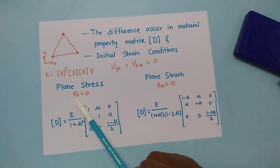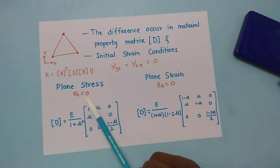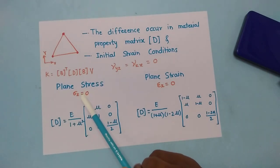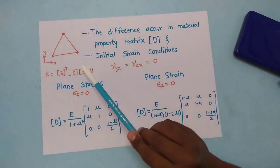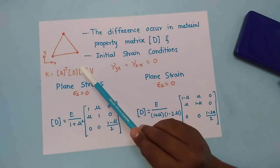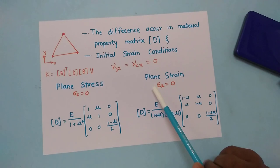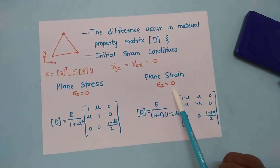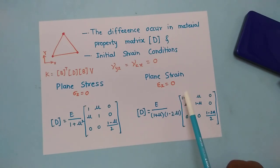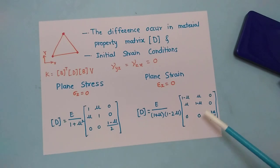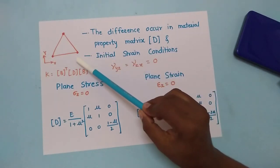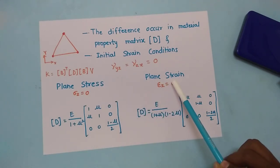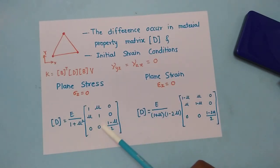For the plane stress condition, sigma-z equals zero — meaning stress in the third direction is zero — and the D matrix is derived accordingly. For the plane strain condition, epsilon-z equals zero — meaning strain in the third direction is zero — and a different material property matrix D is derived. Both use the same triangular element, but the D matrix values and initial conditions differ.